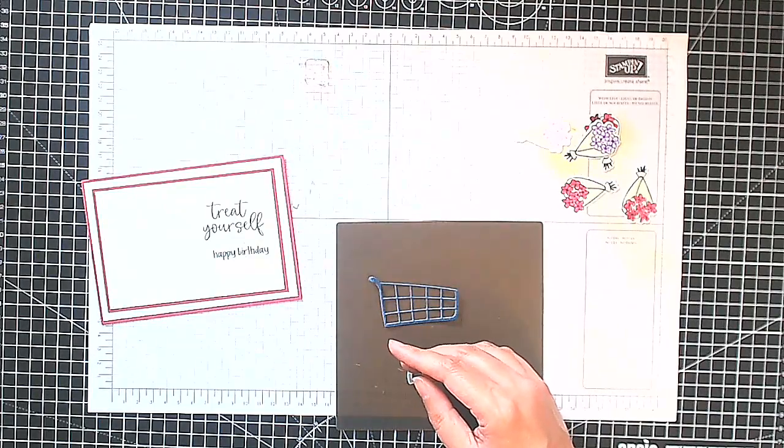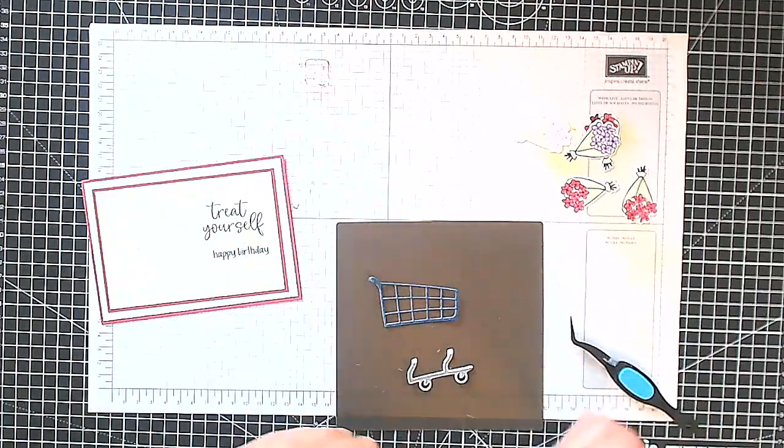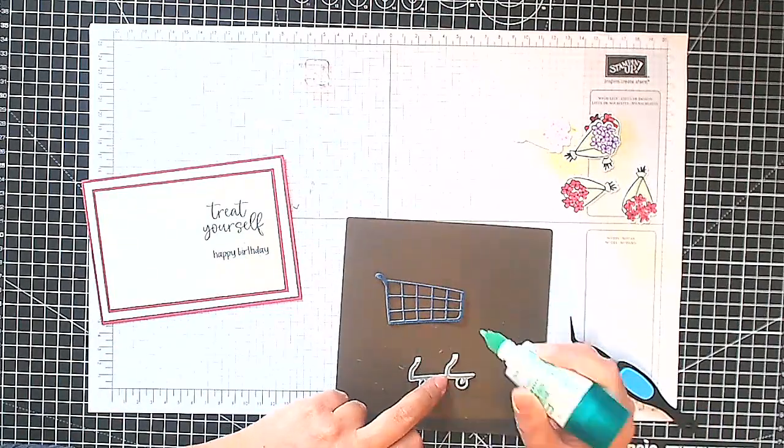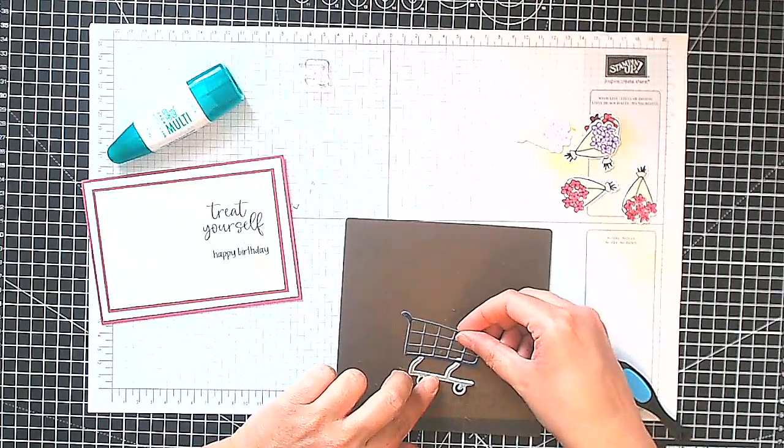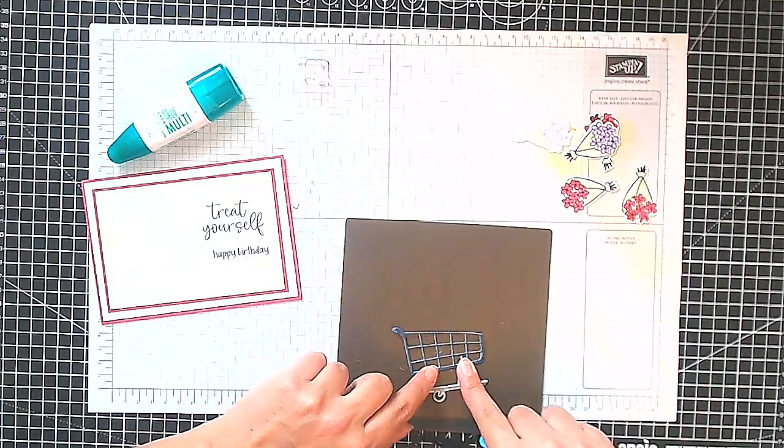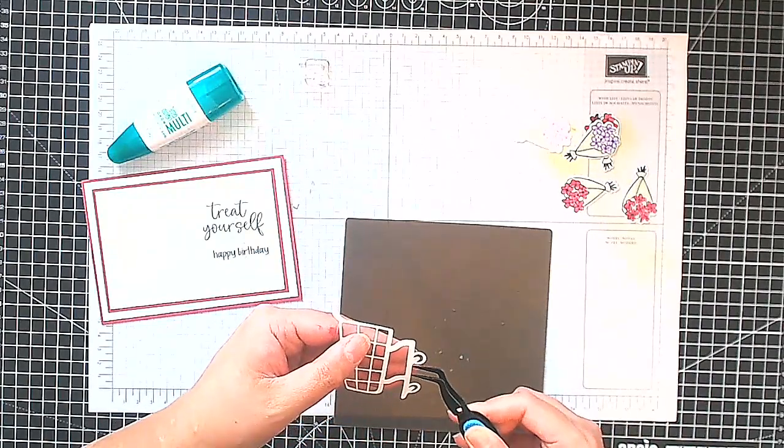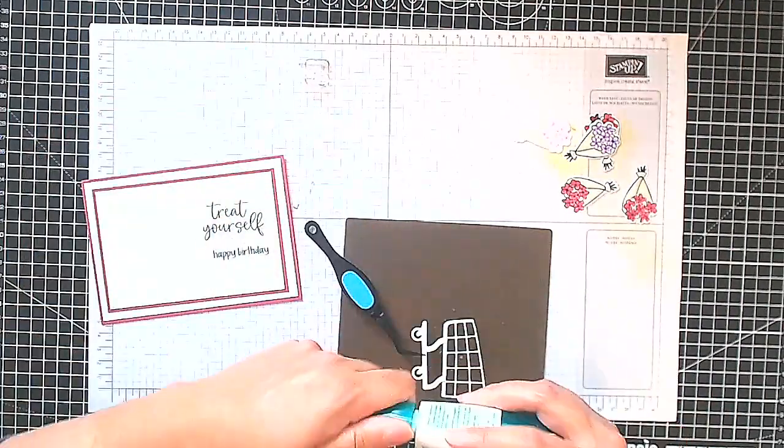Now we want to add a little sparkle or shimmer to our shopping trolley. In order to do that I'm going to use the Wink of Stella pen. I'm just going to put our trolley together first as you can see here. I actually think I'm going to put everything together and then use the Wink of Stella.